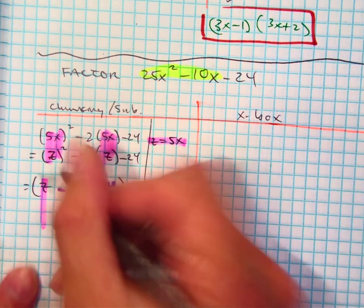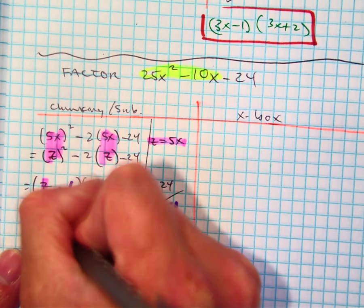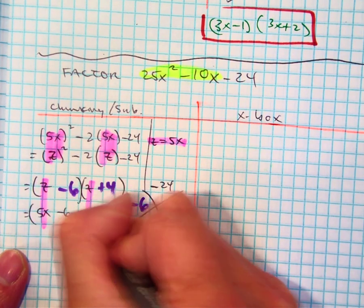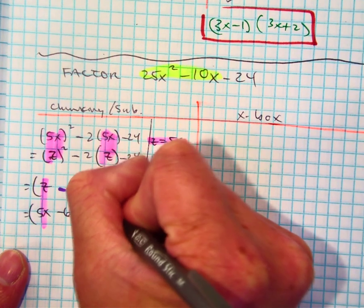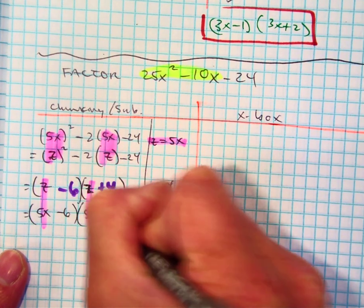Z is equal to what? 5x minus 6. And what do you write here? Z, minus. 5x plus 4.